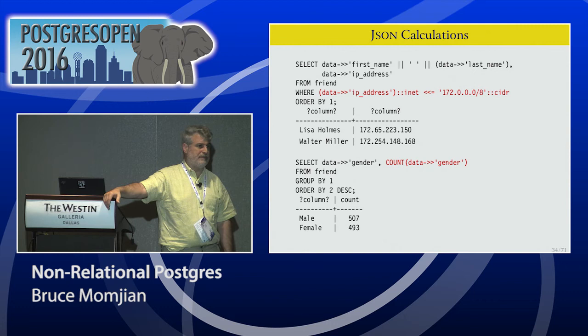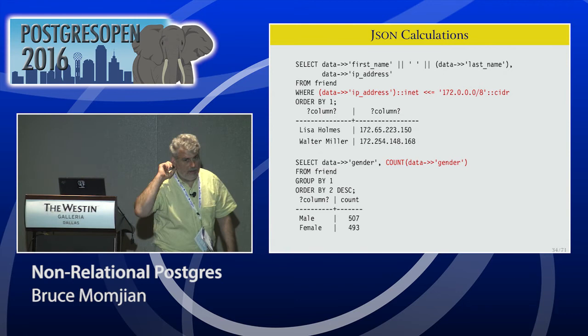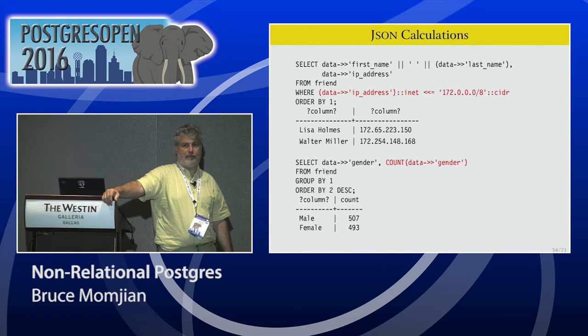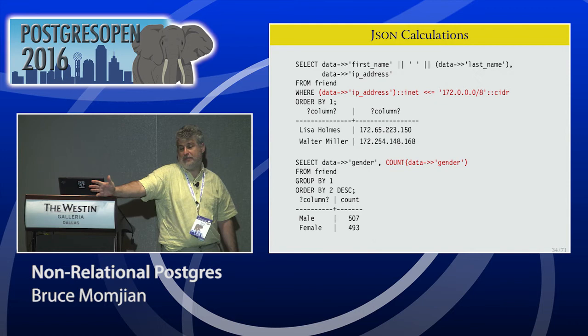Another question about the JSON index: it's a B-tree index of text — a B-tree text index on that particular expression.